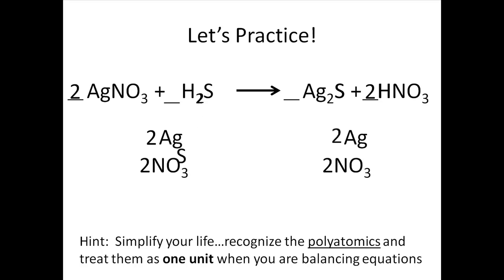Next, let's look at sulfur. It appears that we have 1 sulfur on each side. Therefore, we don't have to change any coefficients for sulfur. Lastly, let's look at our hydrogen atoms. On the right, we have 2, and on the left we have 2. Congratulations! Our equation appears to be balanced.